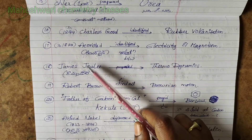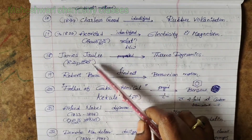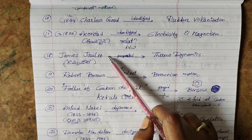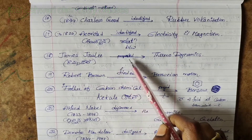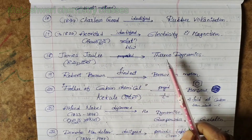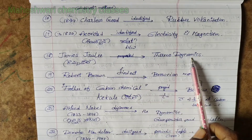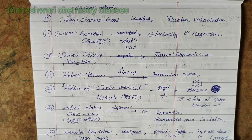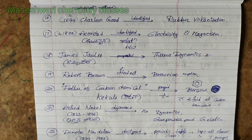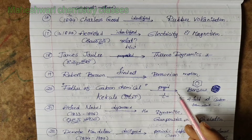James Joule proposed thermodynamics. Next, Robert Brown is named for Brownian motion.